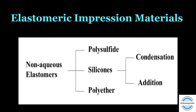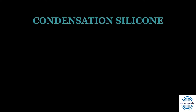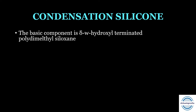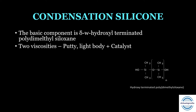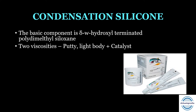The second group of non-aqueous elastomers are the silicones. Based on polymerization reaction they can be condensation or addition silicone. Condensation silicone sets by condensation polymerization. The basic component is hydroxyl-terminated polydimethylsiloxane. It is available in two viscosities — putty (in a jar, dough-like consistency) and light body (in a tube) — along with a separate catalyst tube mixed with either as needed.